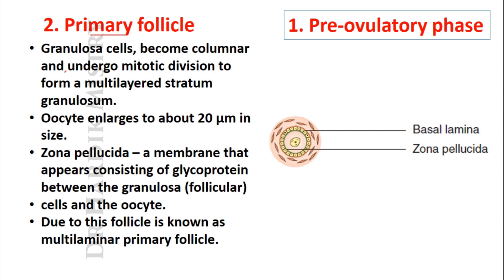In the primary follicle, granulosa cells become columnar and undergo mitotic division to form a multilayered stratum granulosa. The oocyte enlarges to about 20 micrometers in size. A membrane called zona pellucida — consisting of glycoprotein — appears between the granulosa cells and the oocyte. Due to the development of the zona pellucida, the follicle is known as a multilaminar primary follicle.